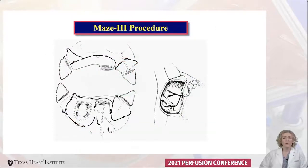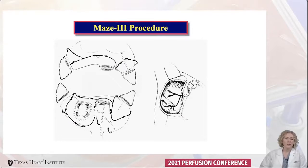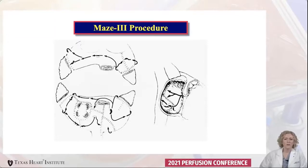The Cut and Sew Cox-Maze 3 procedure involved making multiple incisions in the right and left atria, which when sewn back together formed a set of scars that isolated the pulmonary veins and the posterior left atrium. Right atrial incisions are also made. These lesions direct the sinus impulse from the sinoatrial node to the AV node along a specified route, allowing coordinated electrical activation of the entire atrial myocardium. The Cox-Maze 3 was first used in April 1992 and served as a basis for all subsequent minimally invasive approaches, or the Cox-Maze 4 procedure.